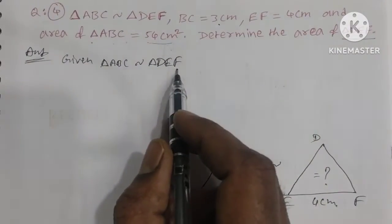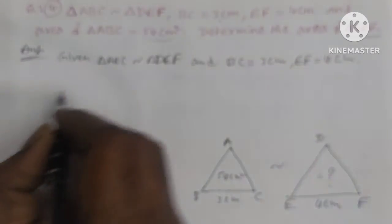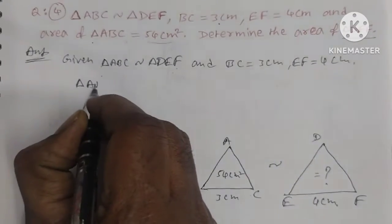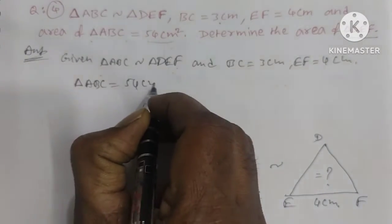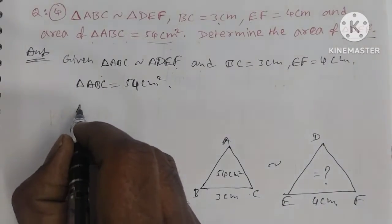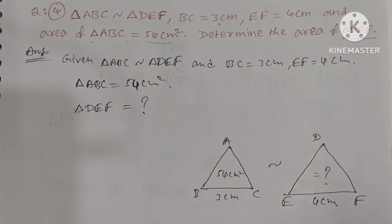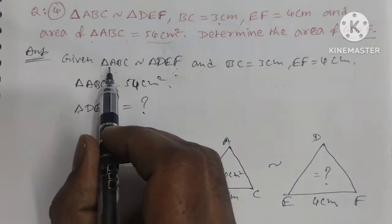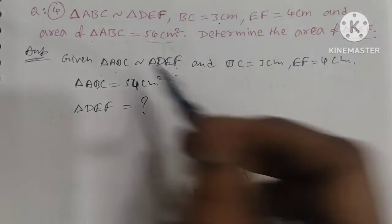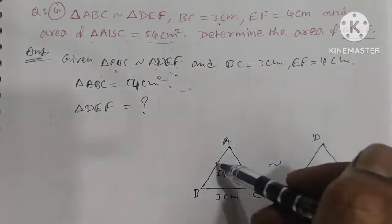Triangle ABC and triangle DEF are similar. BC = 3 cm, EF = 4 cm, and area of triangle ABC = 54 cm². We need to find area of triangle DEF. For similar triangles, the ratio of areas is equal to the ratio of the squares of corresponding sides.